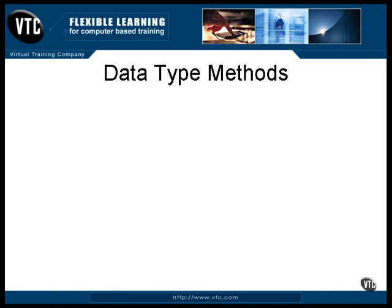In the previous lesson I mentioned that the database contains data of specific types. The result set object that's returned to you has a couple of methods for each of these data types. To retrieve data you first move the cursor to the row containing the data you want. To access an individual data item from that row, you can either specify its column index or its name. When a table was constructed, each column was assigned both a position, an index, and a name.